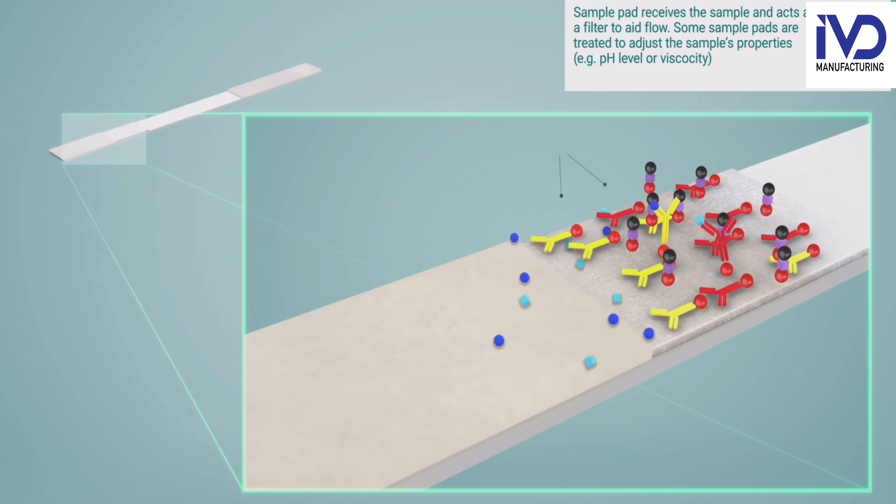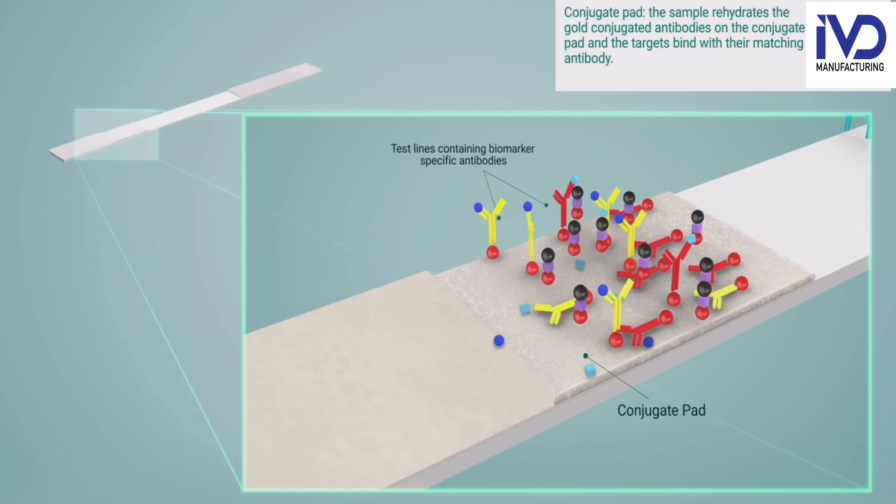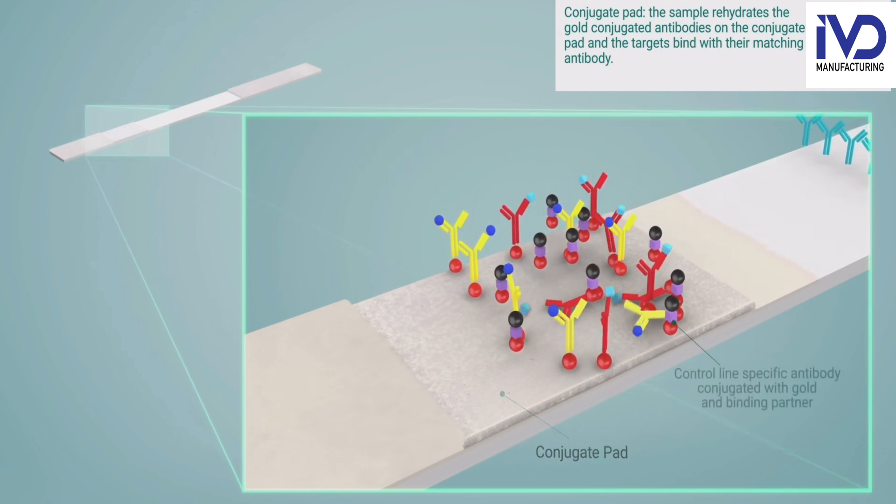The targets are going to bind with the corresponding antibodies. There are two types of antibody: the yellow one and the red one. Both antibodies are banded with gold colloidal particles.